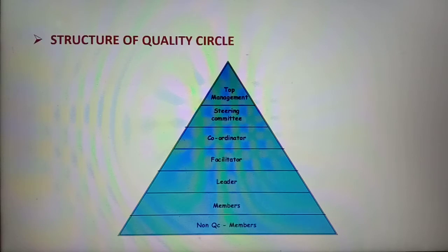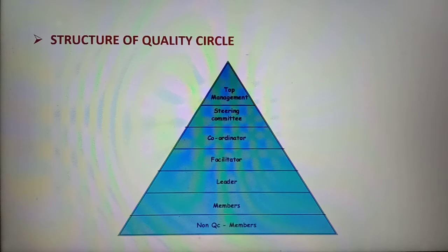This is the structure for quality circle, which starts from top management. After that, a steering committee handles the coordinator. The coordinator is followed by a facilitator, then the leader, members, and non-QC members.